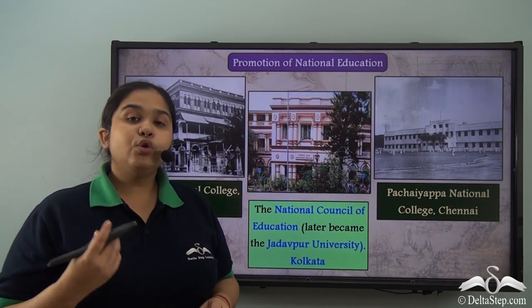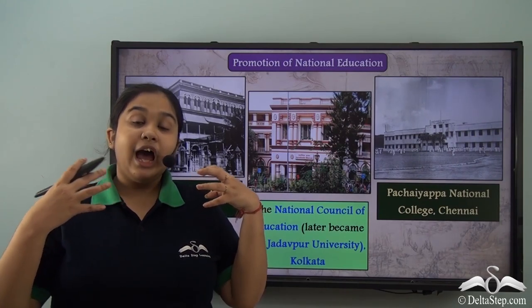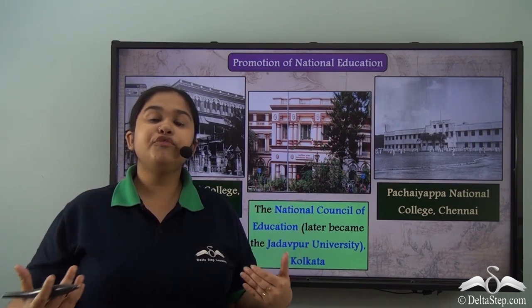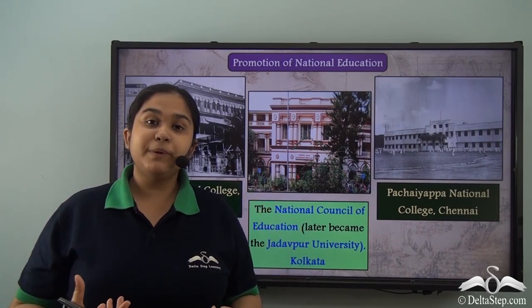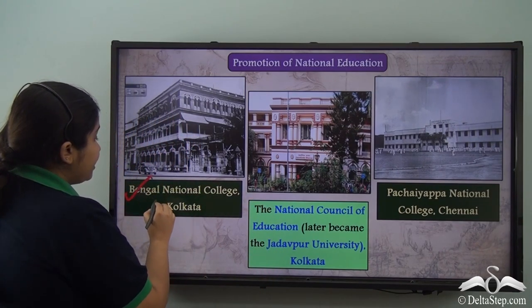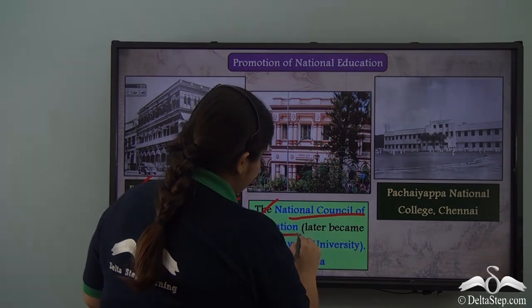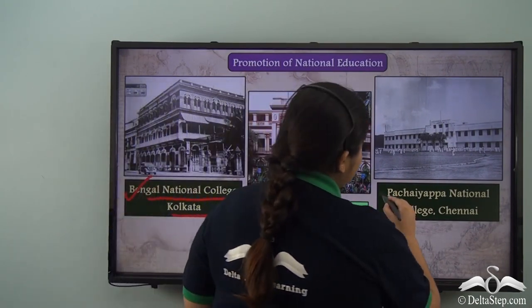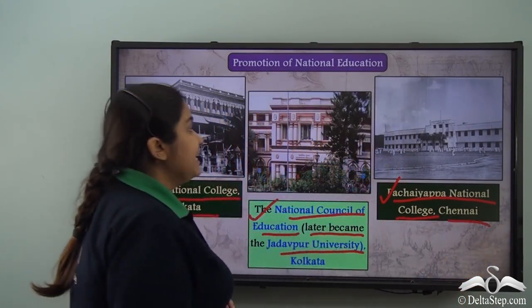There was also growth of nationalist education, with the establishment of national schools, national colleges, and universities that supported such ideals. These included the Bengal National College of Kolkata, the National Council of Education which later became Jadavpur University of Kolkata, and the Pachayappa National College in Chennai.